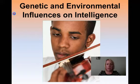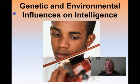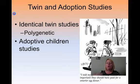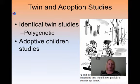Our last section on intelligence is going to be talking about genetics and environmental influences on intelligence, including things like gender differences and bias. Twin studies and adoption studies are the gold standard in studying all of this.